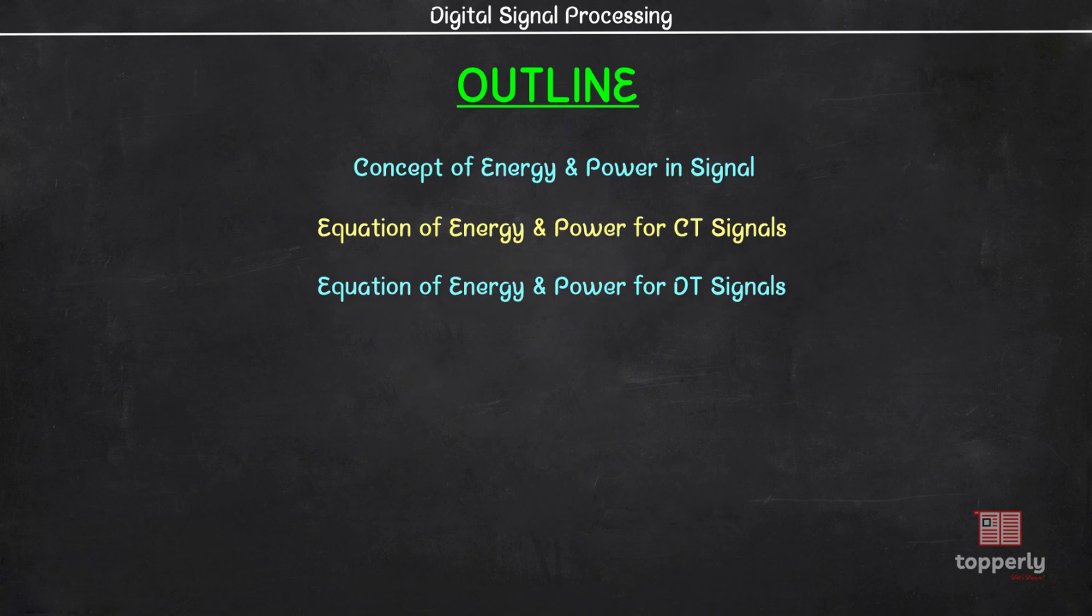Here is the outline for this course. First, we will see how the concept of energy and power for a signal arises. Then we will obtain the equations for energy and power in a continuous time system and later in the case of discrete time systems. So let's start our lecture.